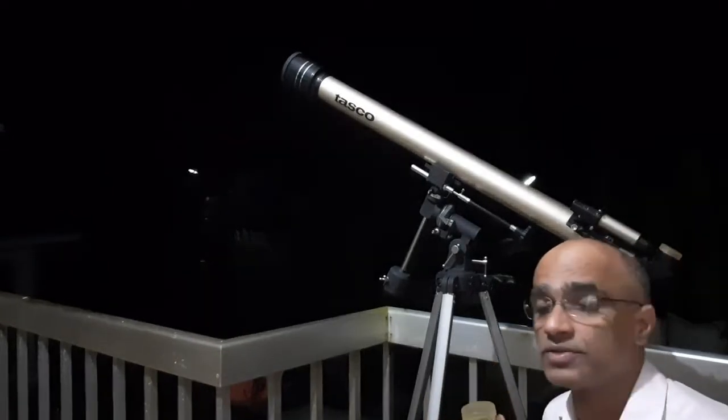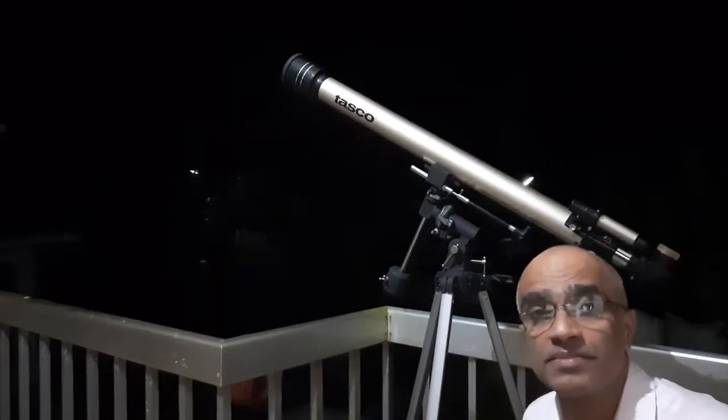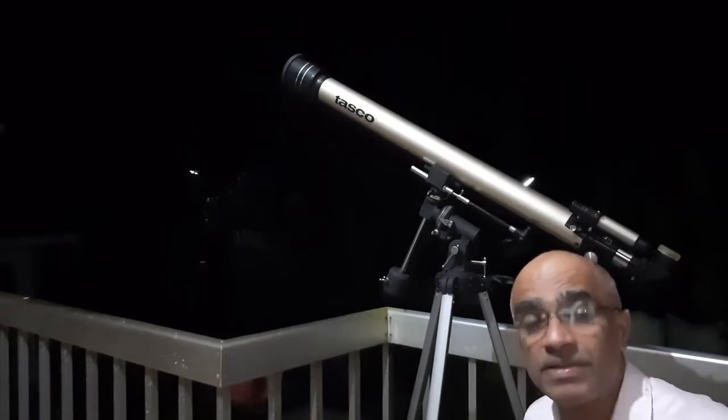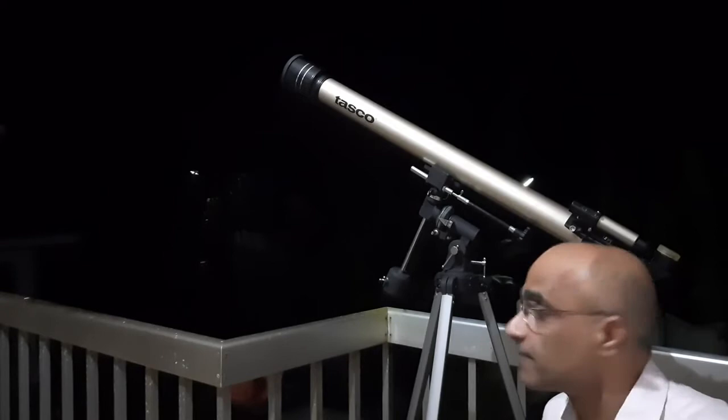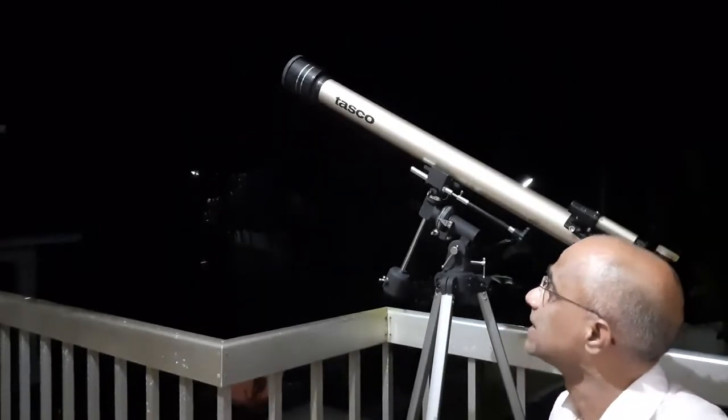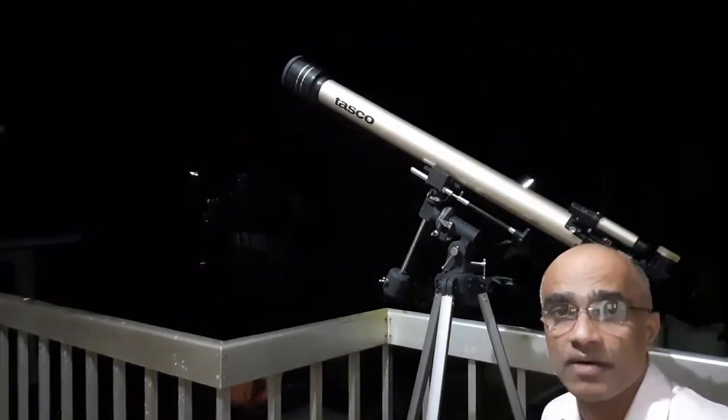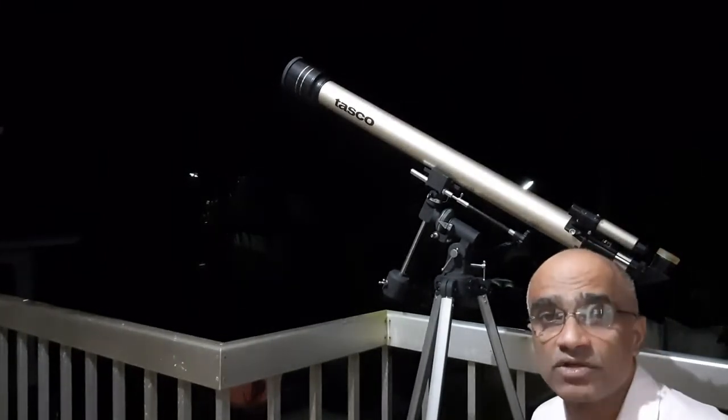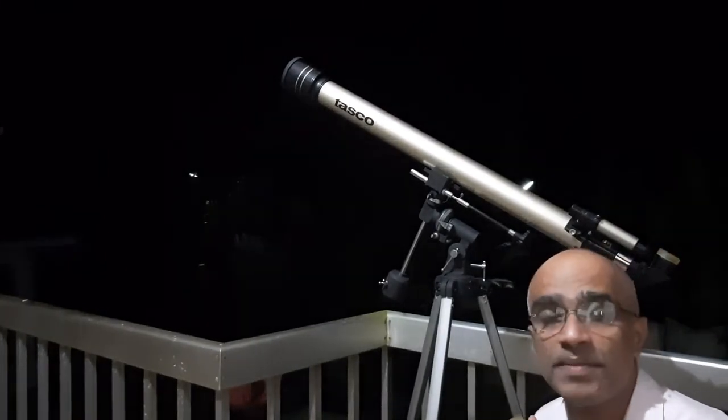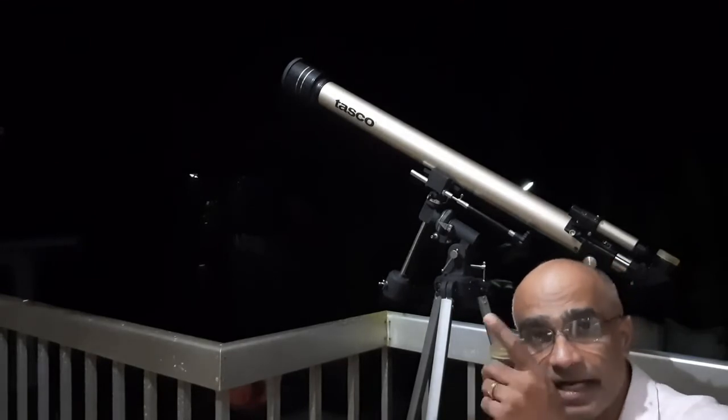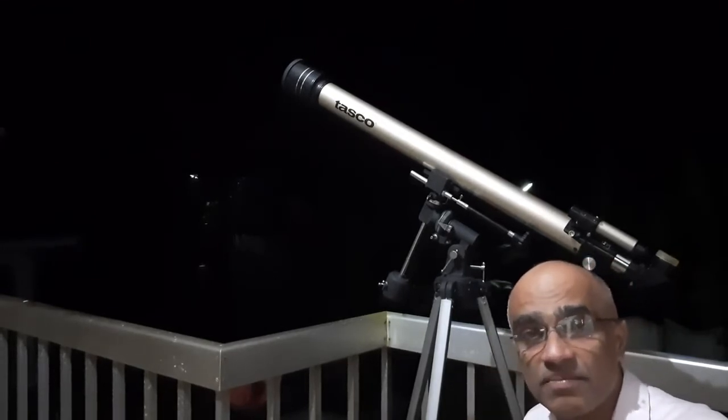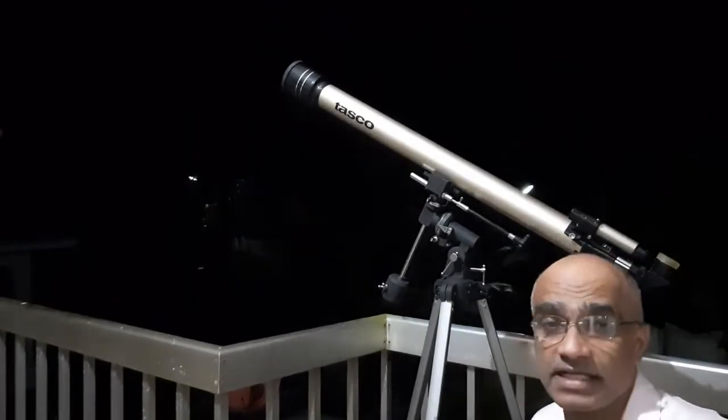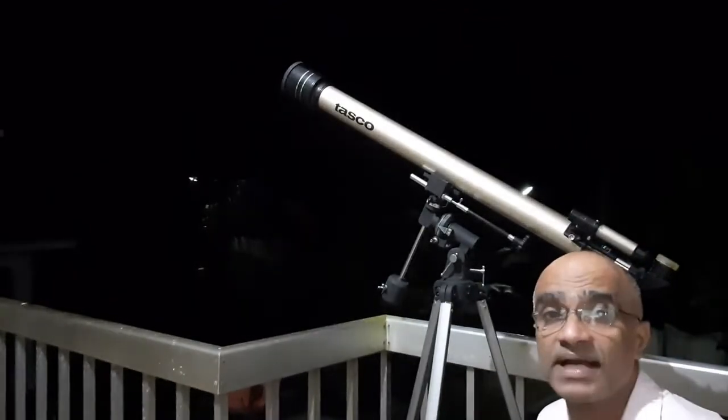So the magnifying power is nothing but the focal length of the telescope divided by the focal length of the eyepiece. So the focal length of the objective, I mean the telescope, is 900 millimeters, and the eyepiece which has got a focal length of 4 millimeters. If you divide 900 divided by 4 millimeters, you'll be able to get the value that is close to 225x. That means 225 times will be the magnification for this telescope.